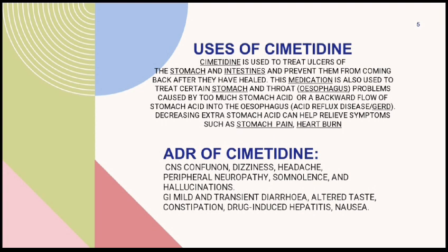Adverse Drug Reactions of Cimetidine: CNS effects include confusion, dizziness, headache, peripheral neuropathy, somnolence, and hallucinations. GI effects include mild and transient diarrhea, taste disturbance, constipation, drug-induced hepatitis, and nausea.